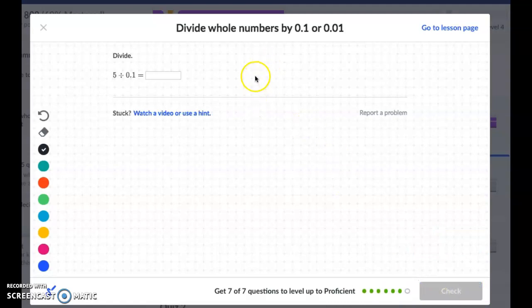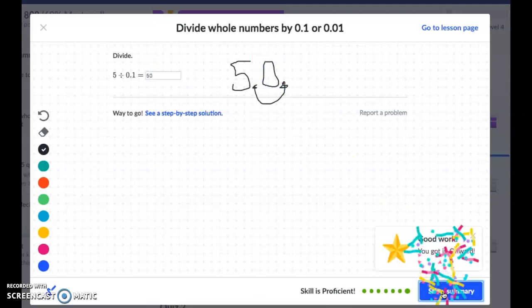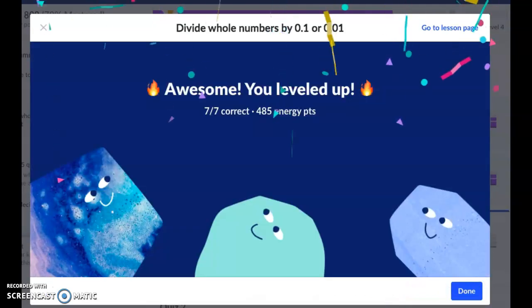And 5 divided into tenths. So we have our 5, and we're going to move that decimal one place over, so that would be 50.